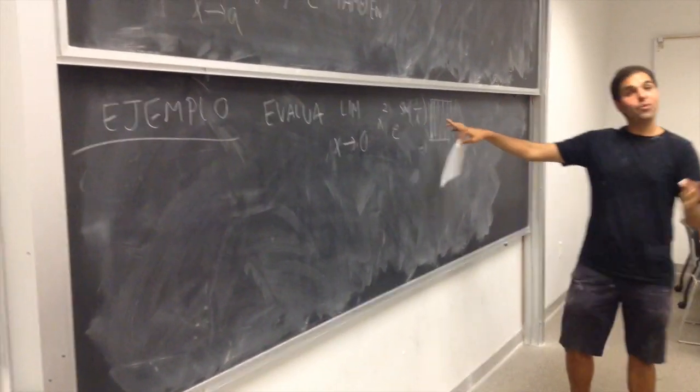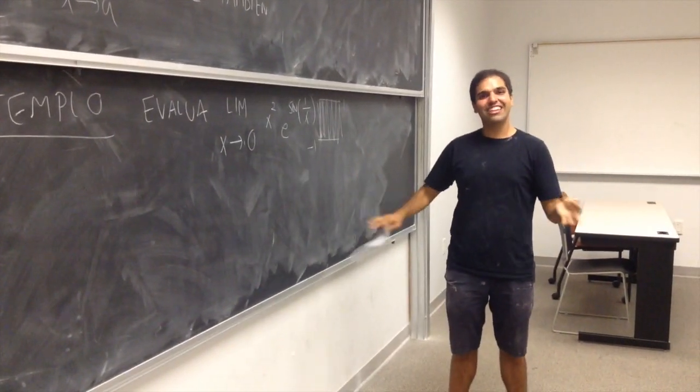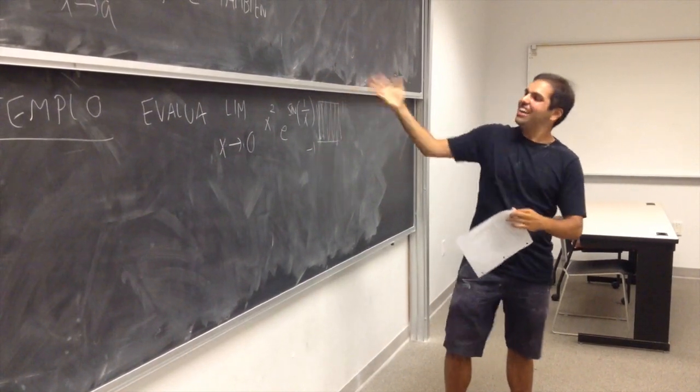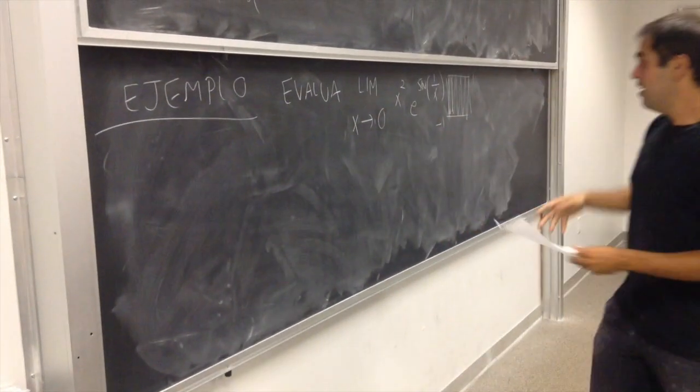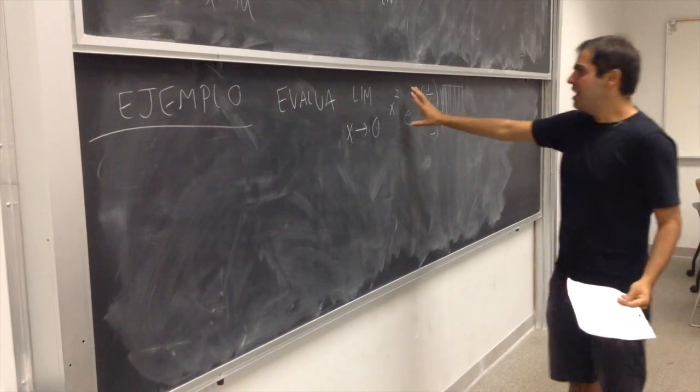seno oscila como una vida loca entre menos 1 y 1. Seno de 1 por encima de x no es una función despacita, aunque vive la vida loca, como las canciones.